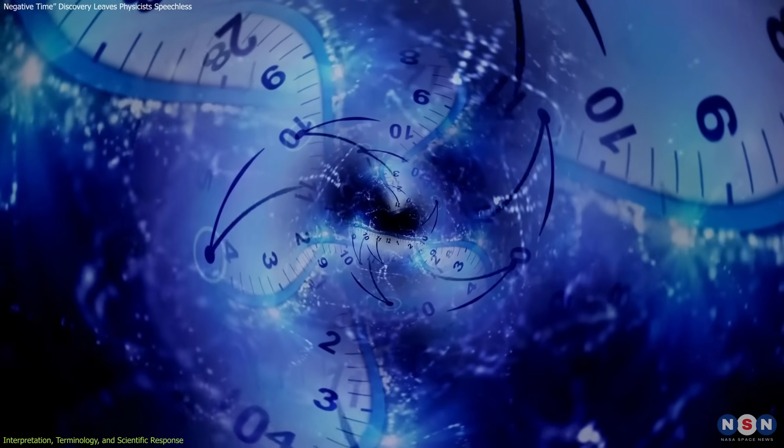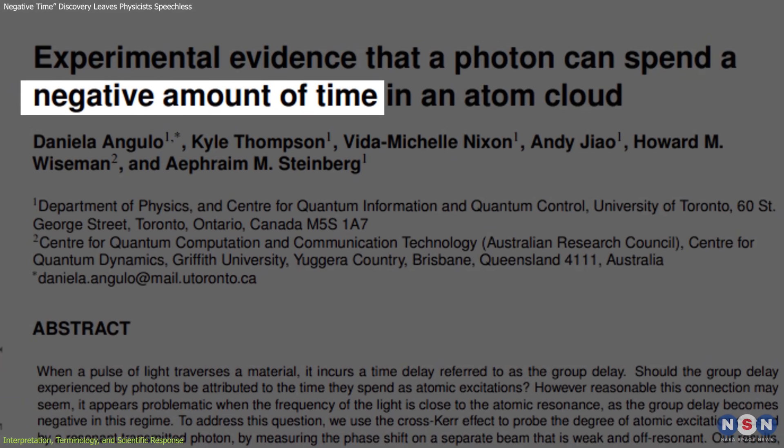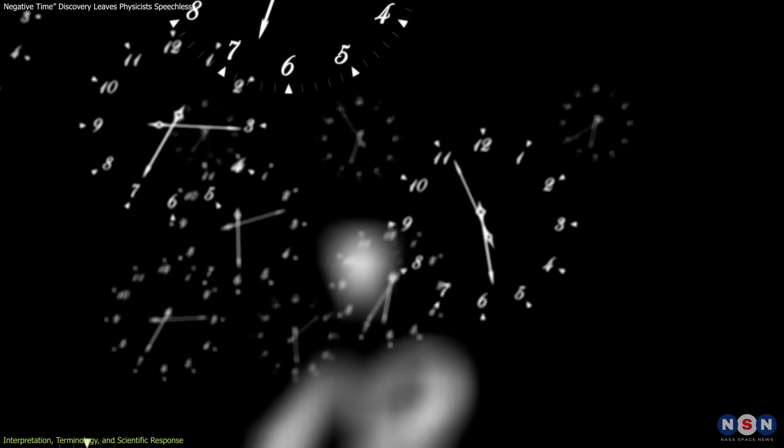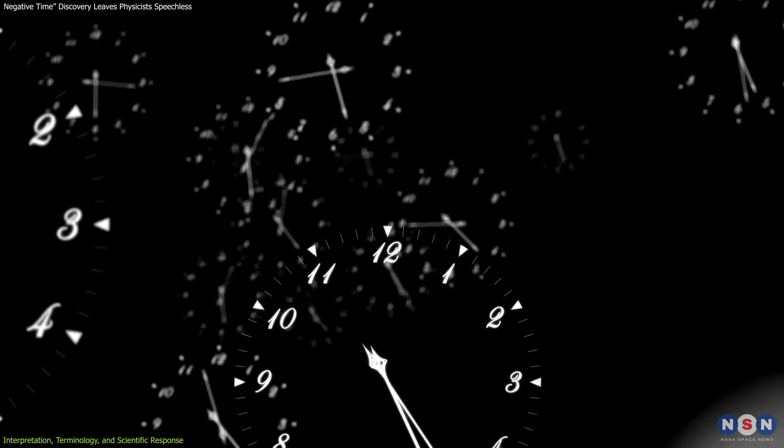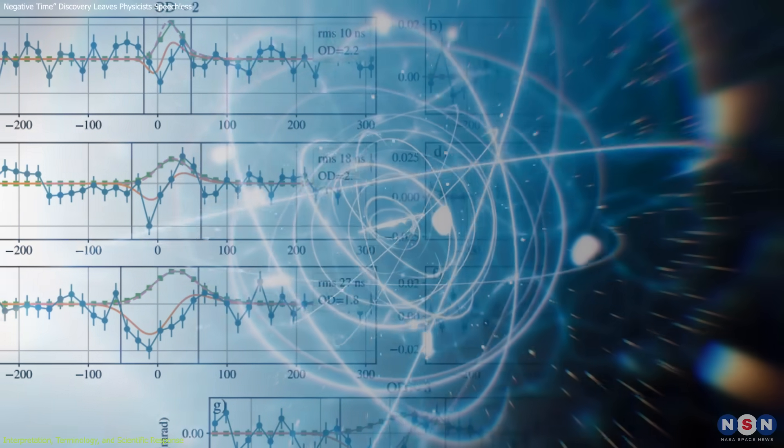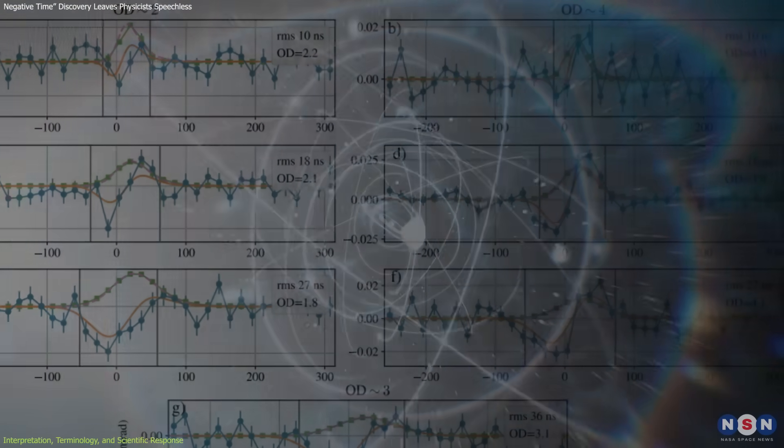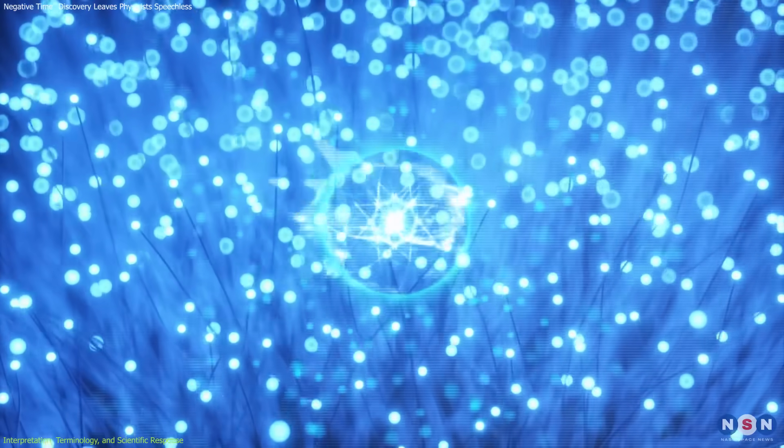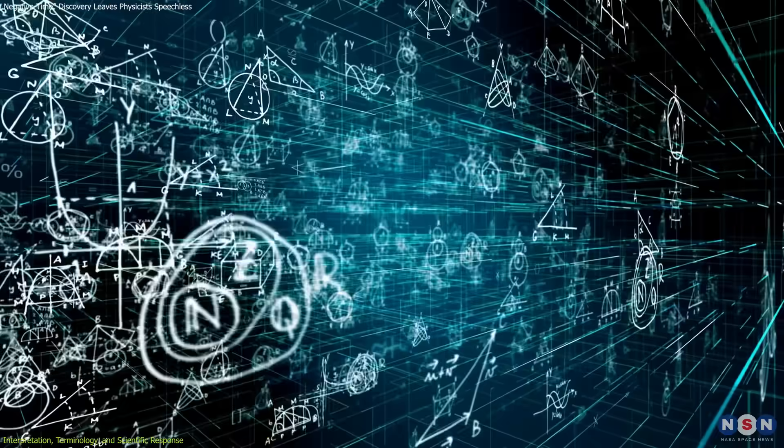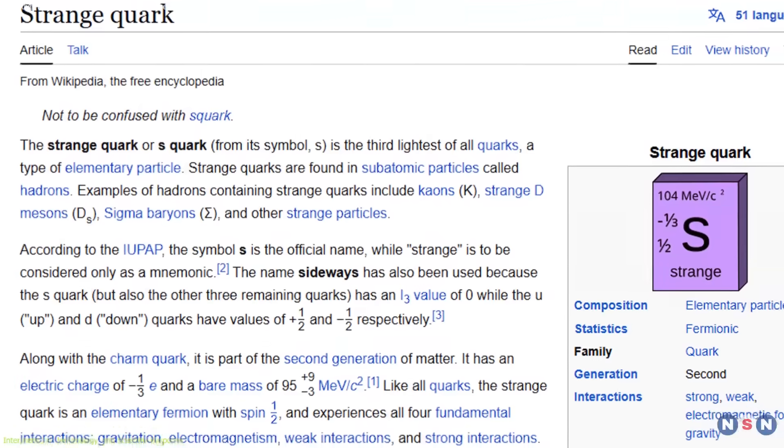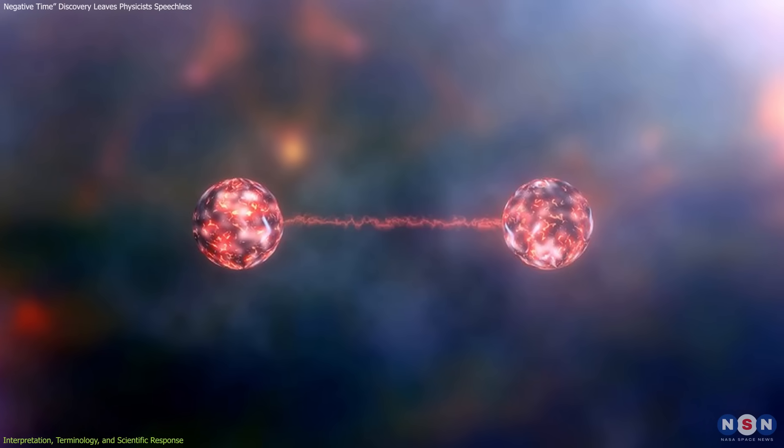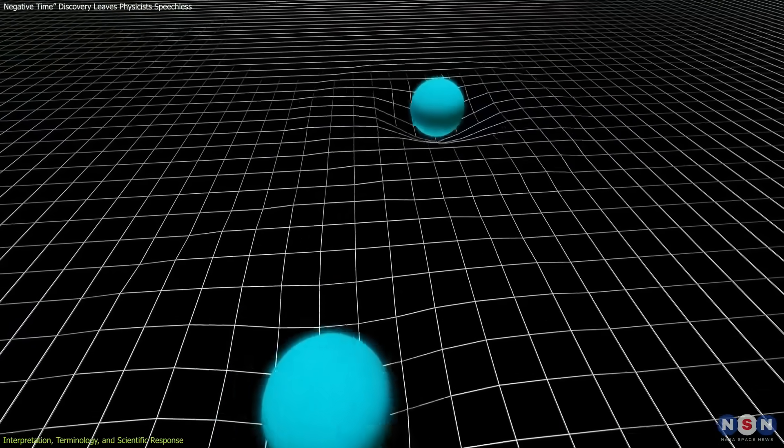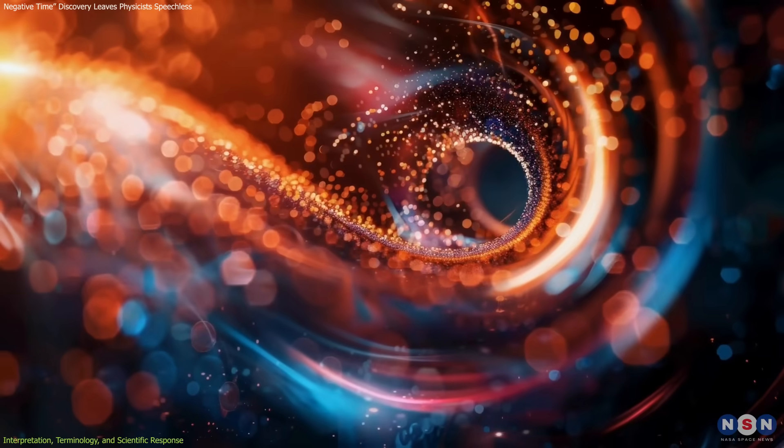It's a mathematical consequence of how the pulse's phase evolves, not evidence of time reversal. The researchers acknowledge this and clarify that their use of negative time isn't meant to suggest actual backward motion through time. Instead, it's a label for a result that contradicts everyday intuition, highlighting how photon behavior in quantum systems challenges classical assumptions. Language in science often carries these tensions. Terms like strange quarks, spooky action, or virtual particles aren't descriptive but serve to signal conceptual gaps between classical language and quantum reality.